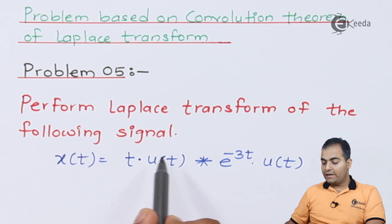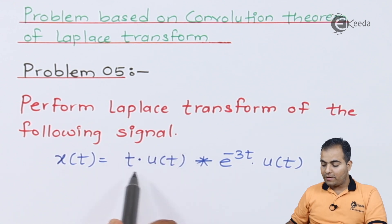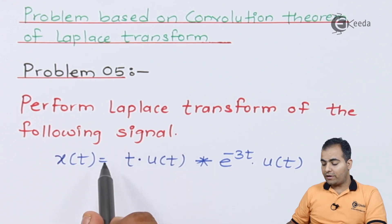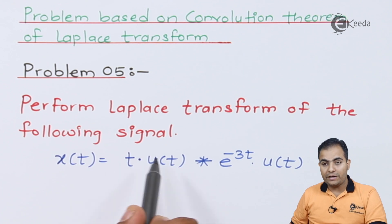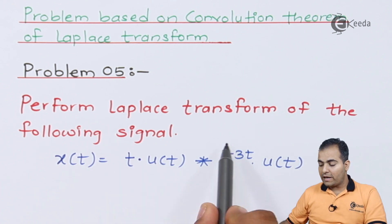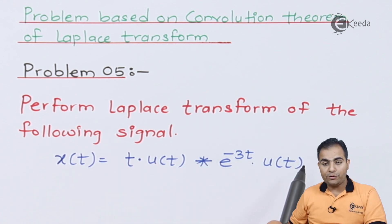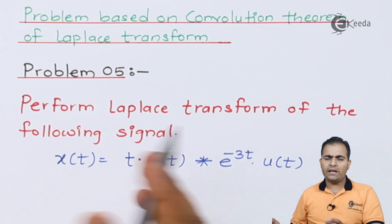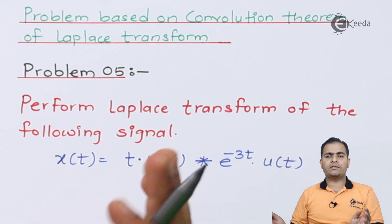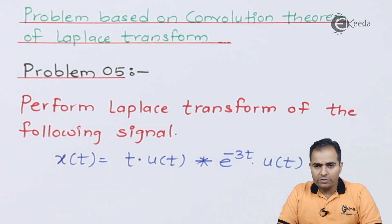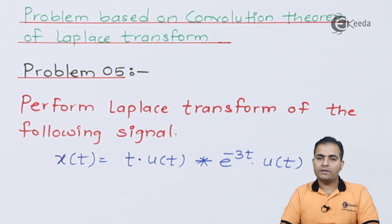First we have to find the Laplace transform of t·u(t), then we find the Laplace transform of e^(-3t)·u(t), and then according to the convolution theorem we multiply the two Laplace transforms together. This will be the solution.